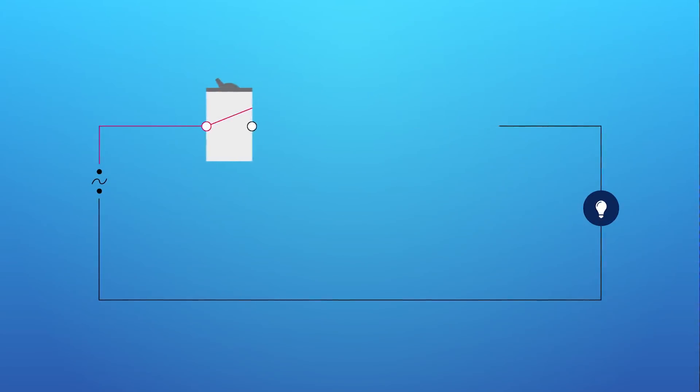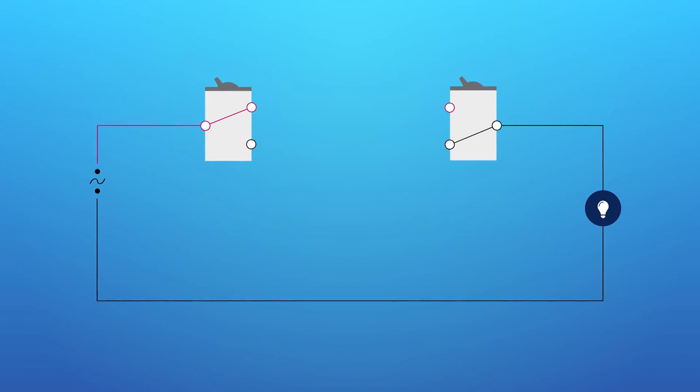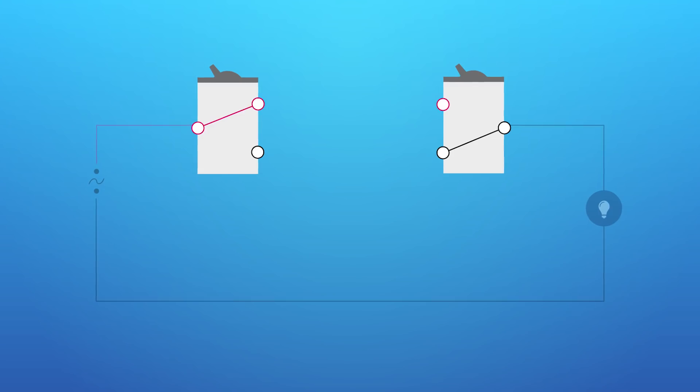But let's say you have two entrances to a room, then you will probably want a second switch. So now you need a different kind of switch, actually two of those different kinds of switches. These switches are called three-way switches, probably because they have three contacts.